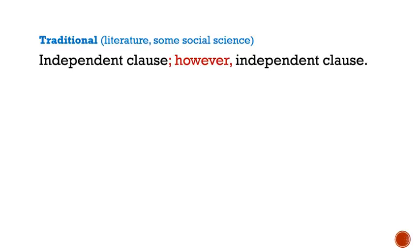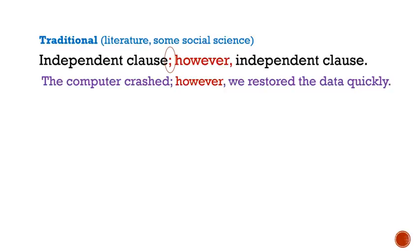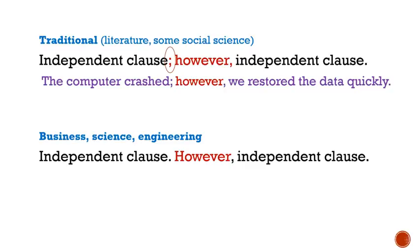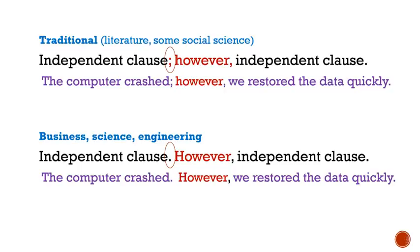This is the traditional way to punctuate these sentences: independent clause, semicolon, transition, comma, and clause. For example: 'The computer crashed; however, we restored the data.' However, in many business and technical fields, this traditional use of a semicolon is not commonly practiced. Instead, they use a period and start a new sentence with 'however': 'The computer crashed. However, we restored the data quickly.' It's perfectly acceptable and very common in these fields to use a period instead of a semicolon. But remember, if you choose to use a semicolon, you need two independent clauses.